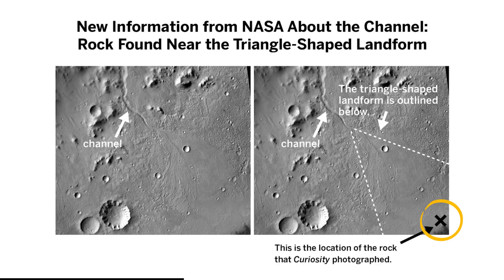New information from NASA about the channel: rock found near the triangle-shaped landform. This is the location of the rock that Curiosity photographed. The image of rock near the triangle-shaped landform was captured by the Curiosity rover at the location marked by the X in the photo. The rock was observed at the bottom part of the triangle-shaped landform.